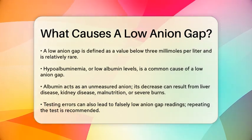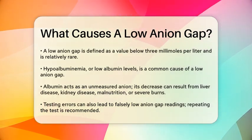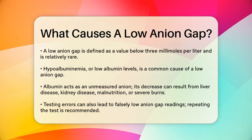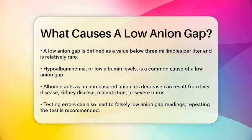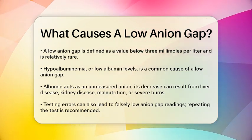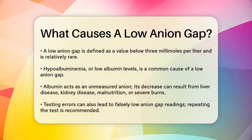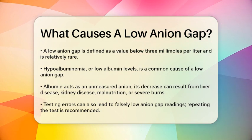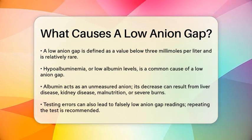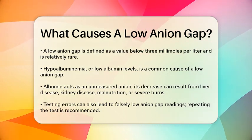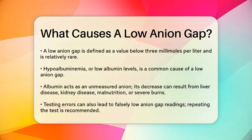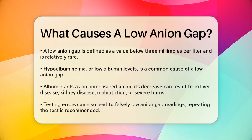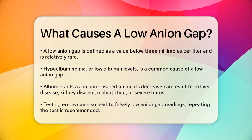One common cause is hypoalbuminemia, which refers to low levels of albumin in the blood. Albumin is a negatively charged protein that acts as an unmeasured anion. When albumin levels drop, it can lead to a decrease in the anion gap. This can happen due to liver disease, kidney disease, malnutrition, or severe burns.